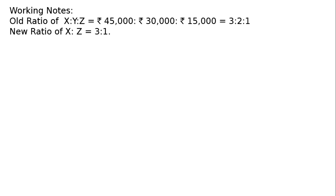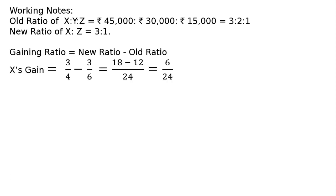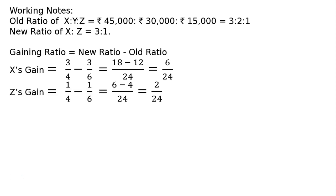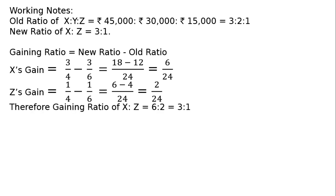The same ratio will prevail. Gaining ratio equals new ratio minus old ratio. X's gain: 3/4 minus 3/6 — LCM 24 — gives 18/24 minus 12/24 = 6/24. Z's gain: 1/4 minus 1/6 — LCM 24 — gives 6/24 minus 4/24 = 2/24. Therefore gaining ratio of X to Z equals 6:2, that is 3:1.